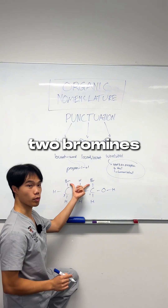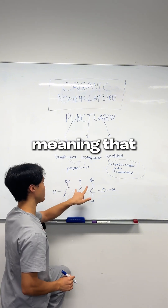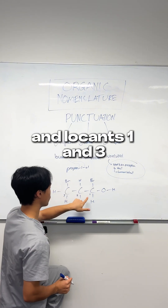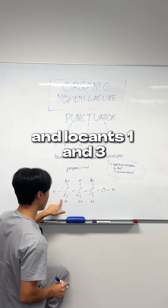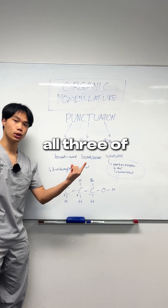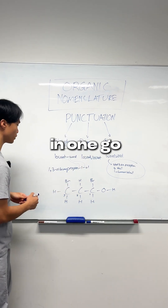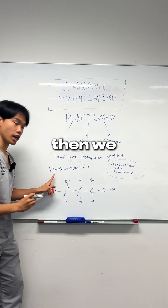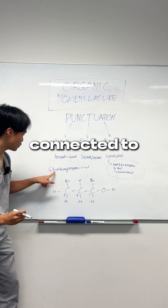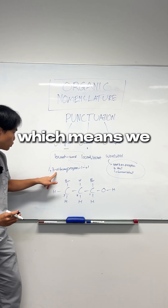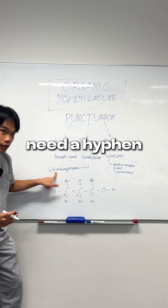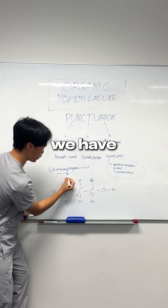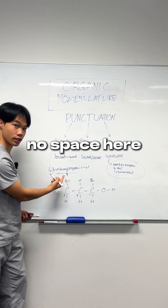Then I have two bromines, meaning that I need to name this as 'dibromo' for two bromines, and locants 1 and 3. This applies all three of our rules in one go. If we have two locants, they need to be separated by a comma. Then we have a locant connected to a word, which means we need a hyphen. And lastly, when we have a word connected to a word, we have no space here.